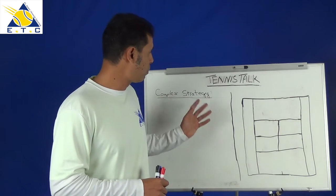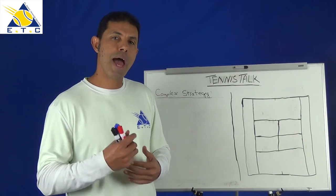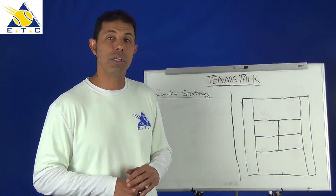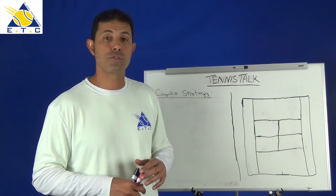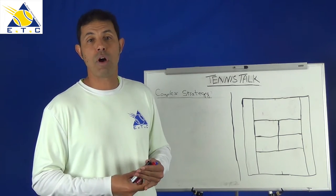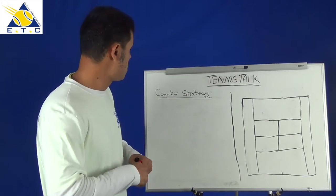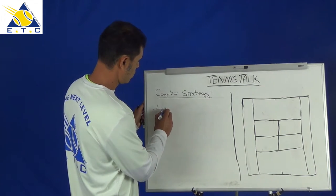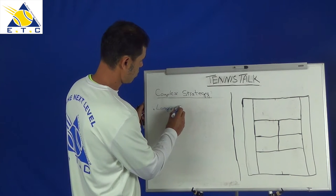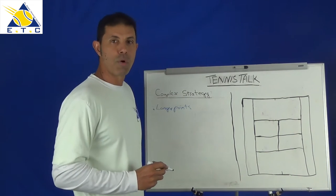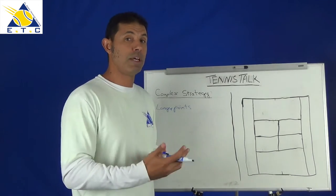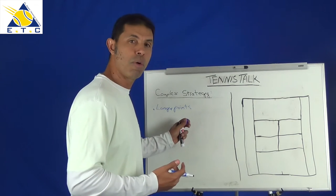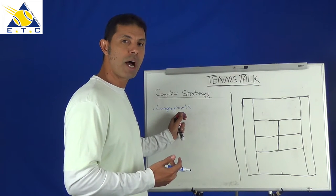Let's go back to our example of complex strategy. How do I manage this big hitter? What are the main goals I need to achieve to make this strategy a success? A good strategy might be to make sure that this player plays longer points. If a player is a big hitter who wants to play very aggressively, they want shorter points to put the ball away and build their confidence. So staying alive in the point is going to be one of my mini goals.